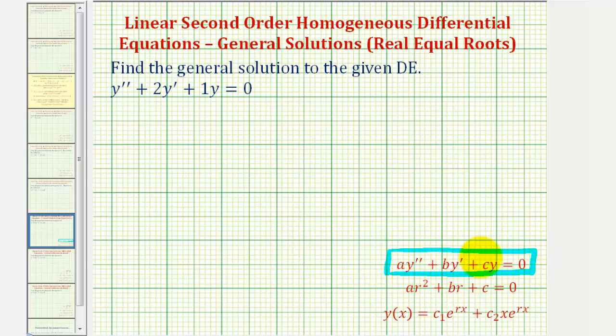Because of this, we can use the solutions to the characteristic equation given here to find the general solution. Looking at the given differential equation, notice that a is equal to one, b is equal to two, and c is equal to one.